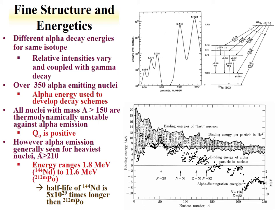The alpha decay energies can vary for the same isotope. When we look at the chart of the nuclides, we have different alpha decay energies listed for a given isotope. There are over 350 alpha-emitting nuclei. Fundamentally, all nuclei with mass greater than 150 are thermodynamically unstable against alpha emission — that means they have a positive Q value. However, the probability of some of those decays is rather small compared to competition from beta, so you generally see alpha with isotopes greater than mass 210.